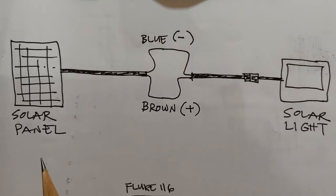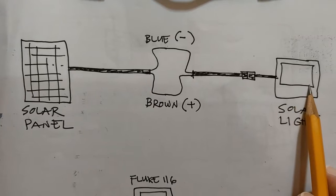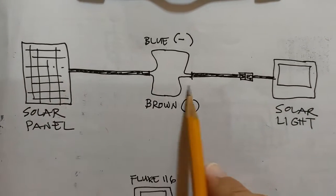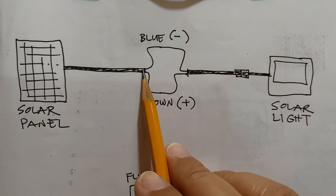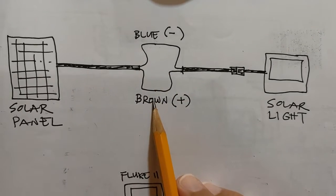The setup of this spot measurement is quite simple. This is my solar panel and the solar light. They are connected by a cable which I stripped off about midway to expose the blue conductor and the brown conductor.